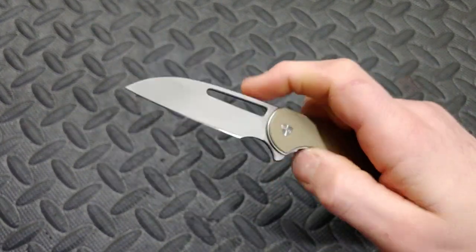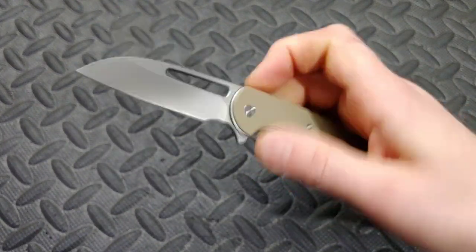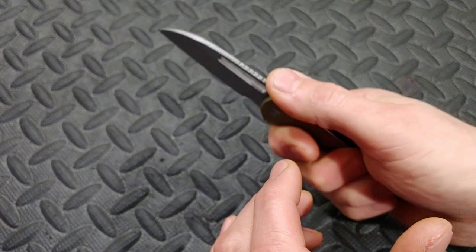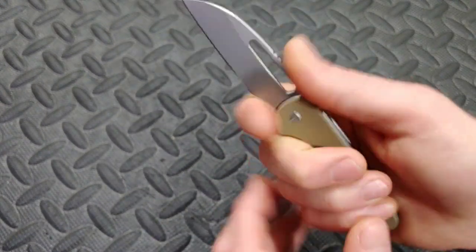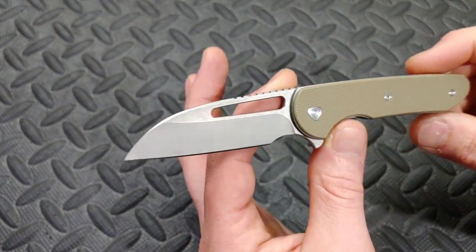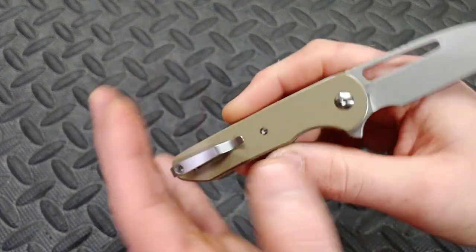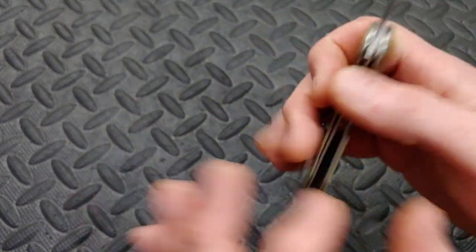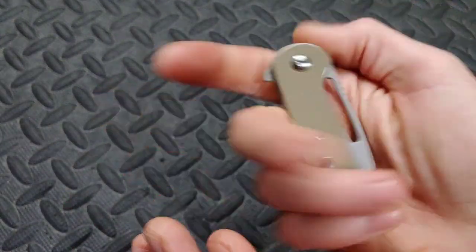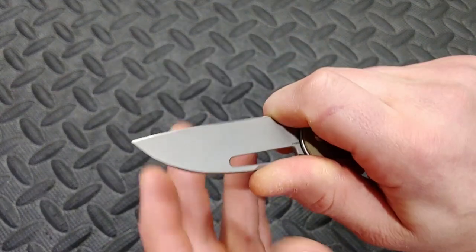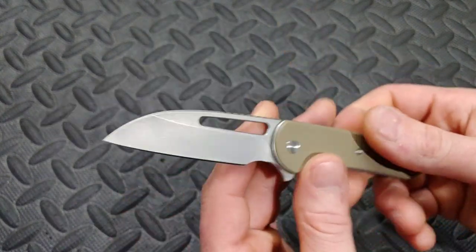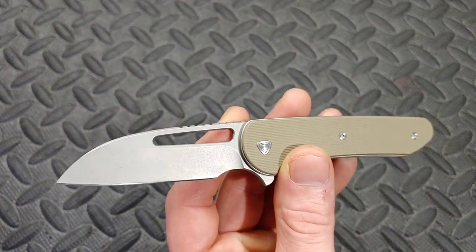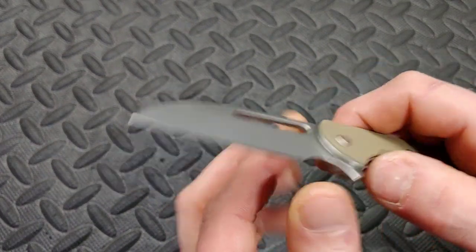I like the jimping. It's well placed jimping. More companies should place jimping in the right area instead of way back here. They put it where you're actually going to use it. Good quality knife. Nice deep carry clip that is inset. So great clip. Love that clip. Not a big knife either. And these things go for like I think 90 bucks or something like that, right around that area.